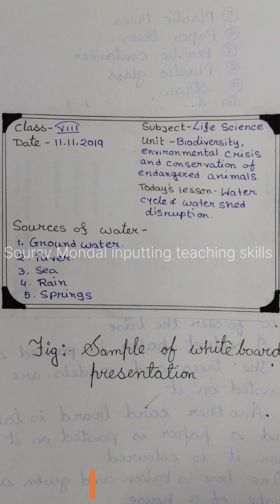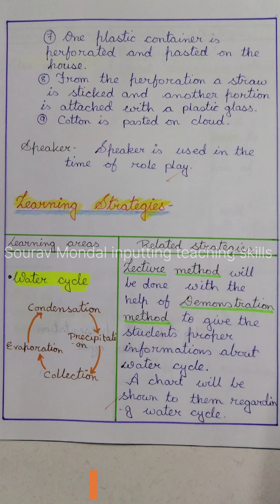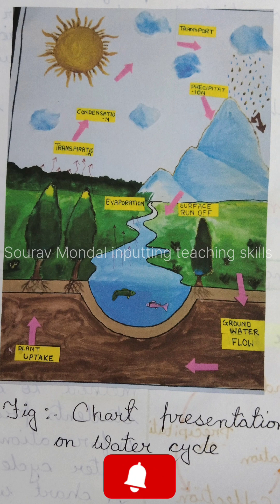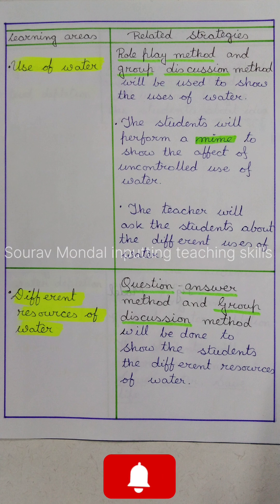Next, I mentioned a replica of my whiteboard representation. Then, the main points of my learning design — the step is Learning Strategies. The first learning area is the Water Cycle, covering the collection of water, then the cycle: evaporation, condensation, and precipitation. With the help of lecture method and demonstration method, I will explain, and with the help of a chart I will explain the use of water.